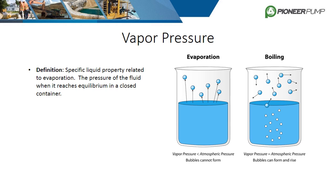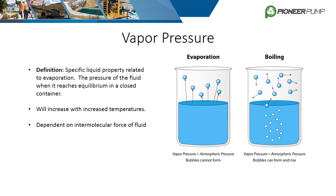The next important concept to review regarding pressure is vapor pressure. Vapor pressure is a liquid property related to evaporation. Technically, it is the pressure of the fluid when it reaches equilibrium at a given temperature in a closed container. The rate of evaporation and the rate of condensation are equal at the vapor pressure. The vapor pressure will increase as temperature increases, and it is also very dependent on the intermolecular forces within the fluid. The intermolecular force is why water tends to bead up and is why surface tension exists. In other words, vapor pressure varies with different fluids.